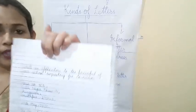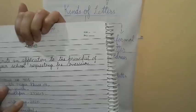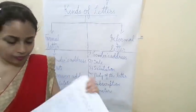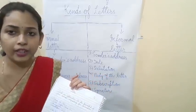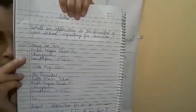I have written this letter in the copy. One by one I will tell you which part is called what. In a formal letter, first of all we write the sender's address — that means our own address. The sender's address means the address of the person writing the letter.